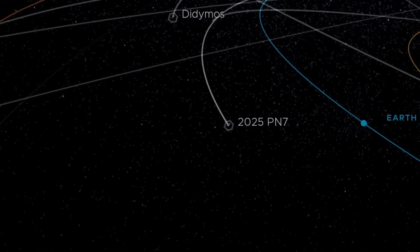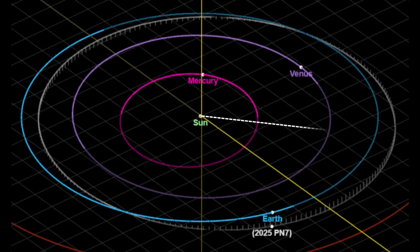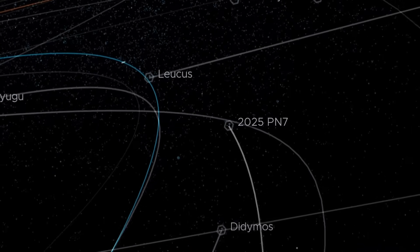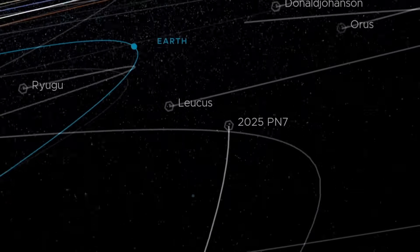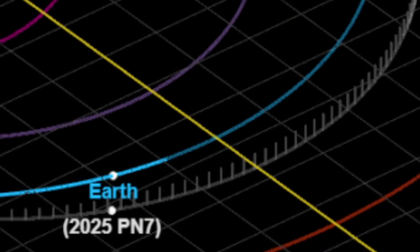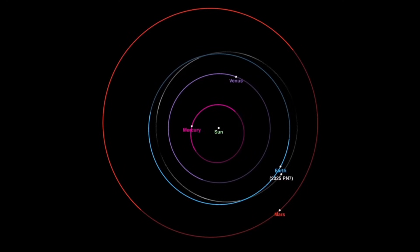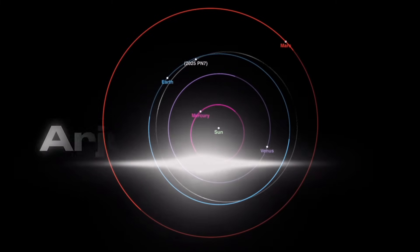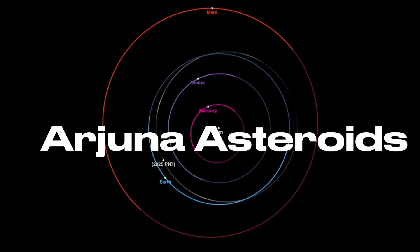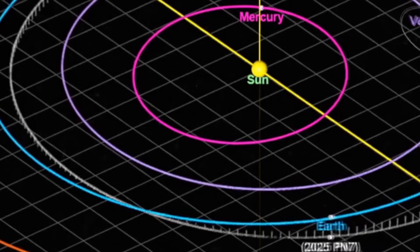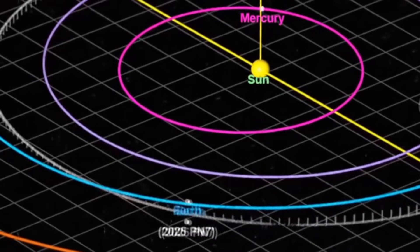But surprisingly, its orbit is very Earth-like. The semi-major axis is about 1.003 astronomical units, very close to Earth's. Its orbital eccentricity is about 0.108, and its inclination is only around 2 degrees. Because its orbit is so similar to Earth's, it falls into a special class of asteroids called Arjuna asteroids, objects that share Earth's orbital path around the Sun very closely.